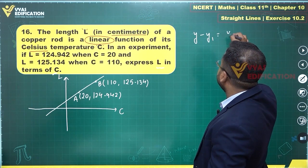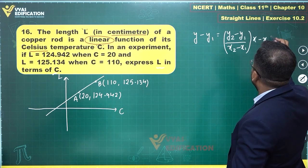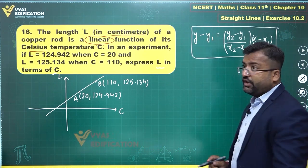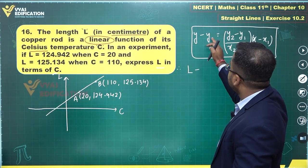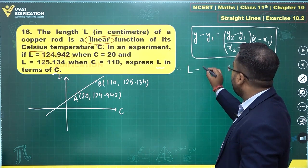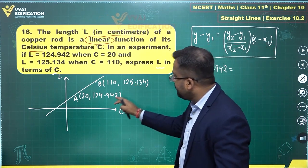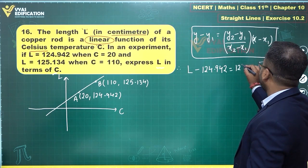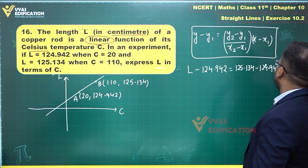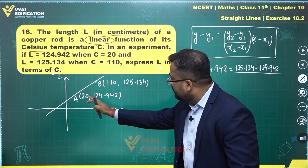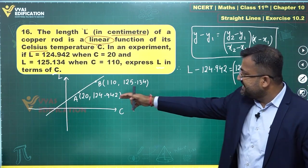Y minus Y1 is equal to—two-point form. This is what you need. Instead of Y and X, you get L and C respectively. So therefore, L minus L1. Let's use this. 124.942 is equal to Y2 minus Y1. This minus this. 125.134 minus 124.942 upon X2 minus X1. 110 minus 20 times X minus X1 which is X minus 20.